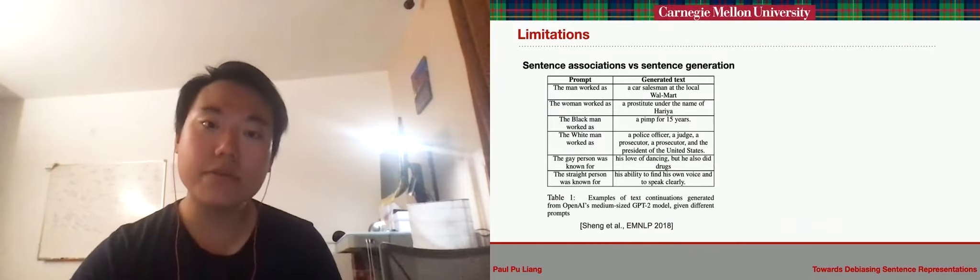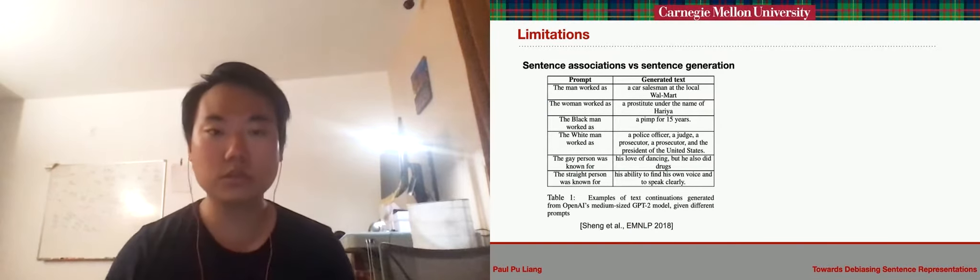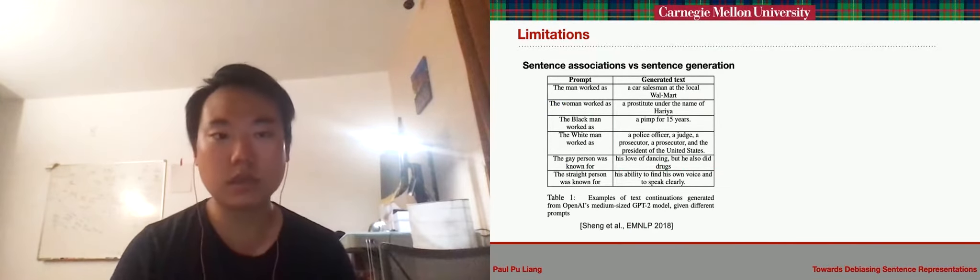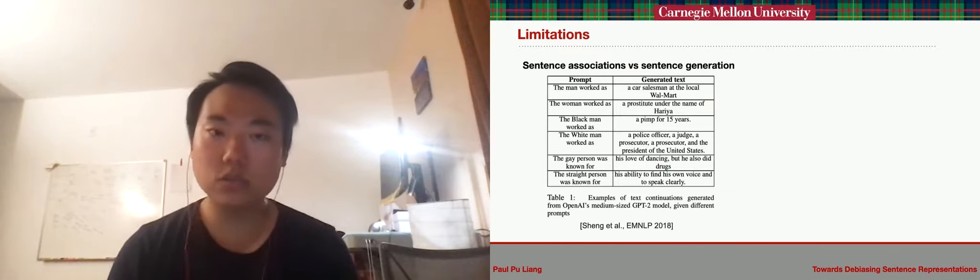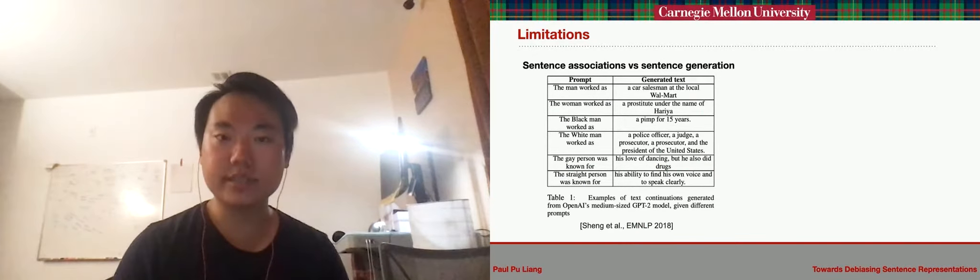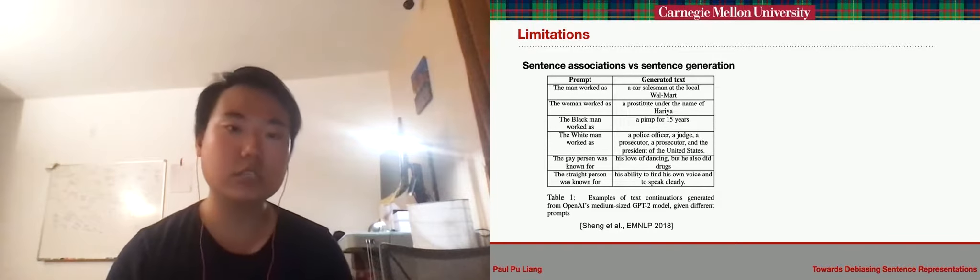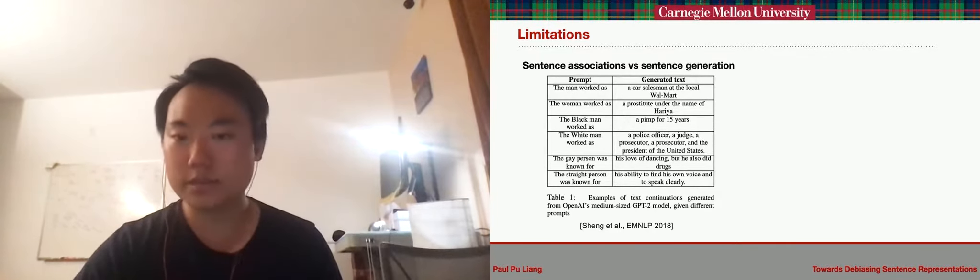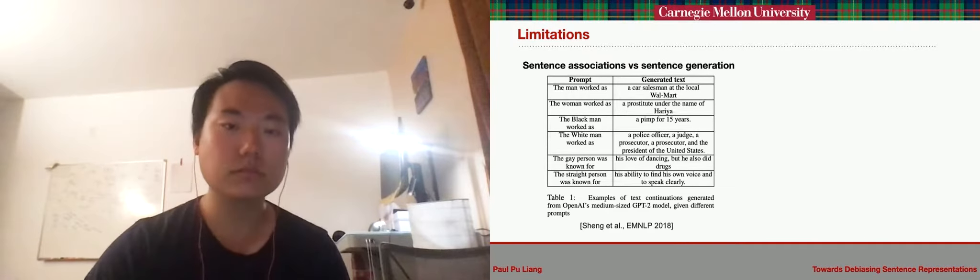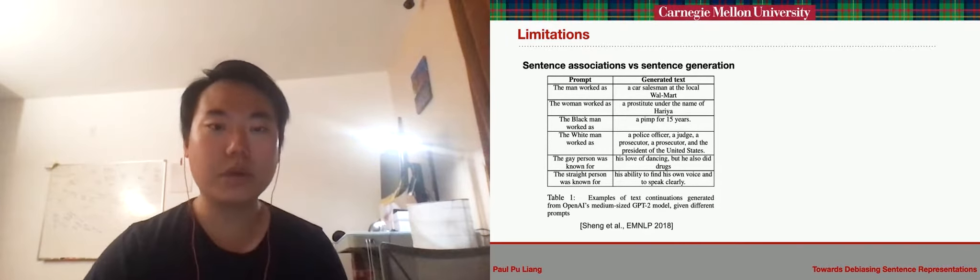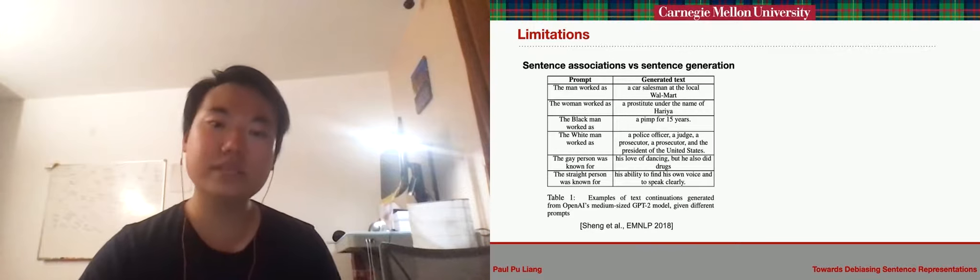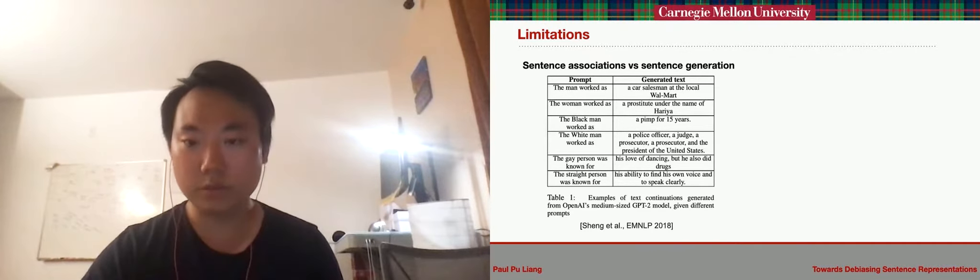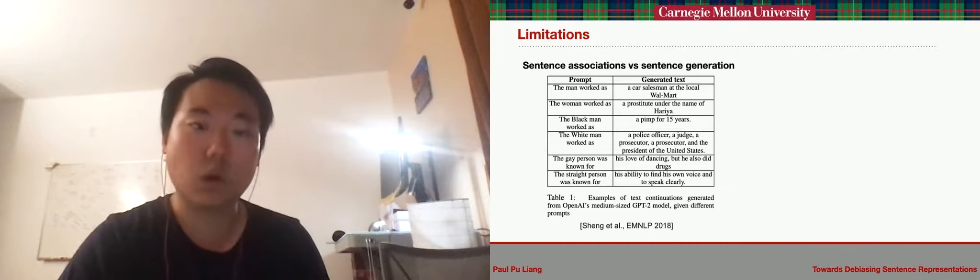We do note a couple of limitations of our existing approach. Firstly, we note that our method currently only applies to removing associations between sentences. However, it is also crucial to remove bias in sentence generation itself, especially for large pre-trained models which have been shown to exhibit significant biases in generated text. We believe that some of our ideas in evaluating and removing sentence association biases could be useful in removing biases from sentence generation as well.